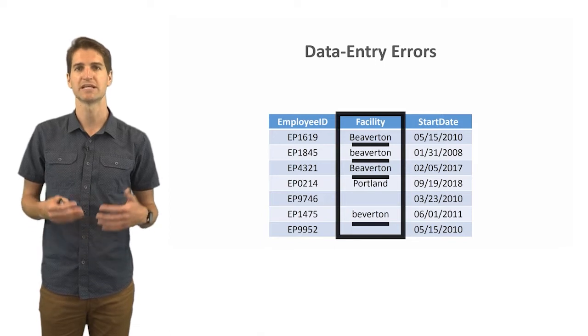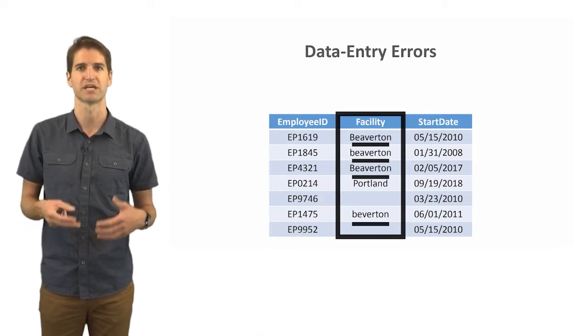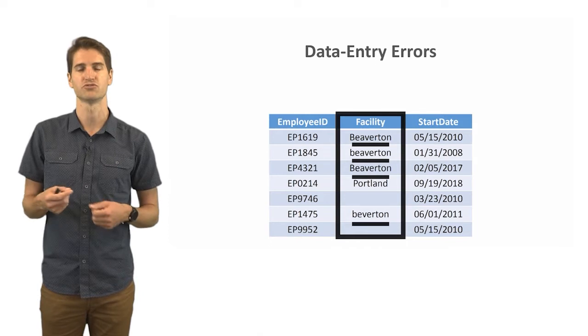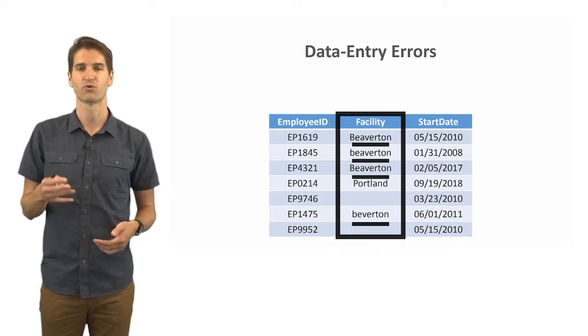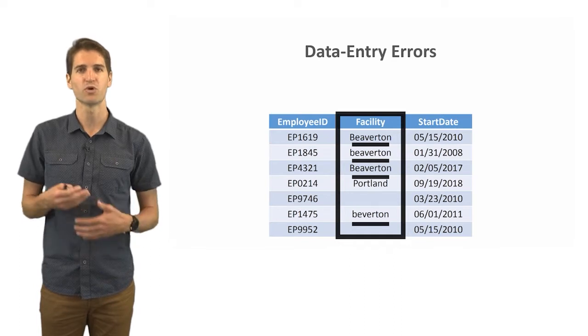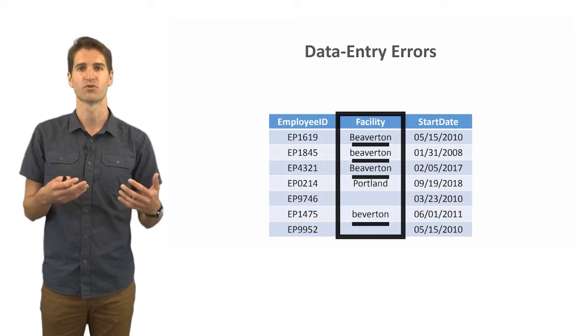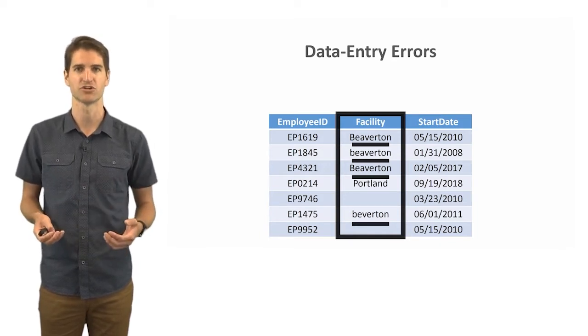Most systems and data analysis packages will recognize these as three separate levels because they do have different case sensitivities, different cases for the first letter, as well as two different spellings. You would find that there are four different levels for this variable, so you'd want to go through and clean this up by creating some kind of standardized validated entry for the Beaverton facility and whatever other facilities might have similar issues.